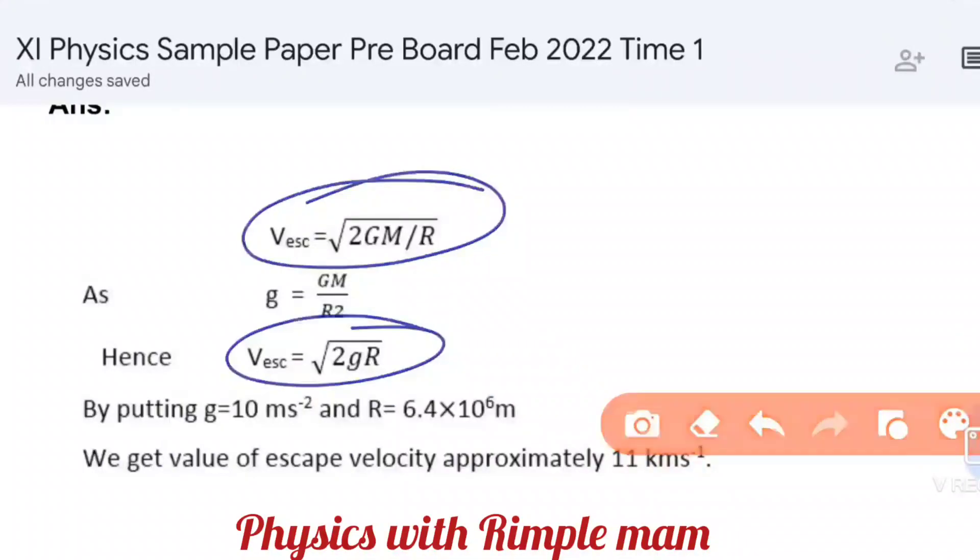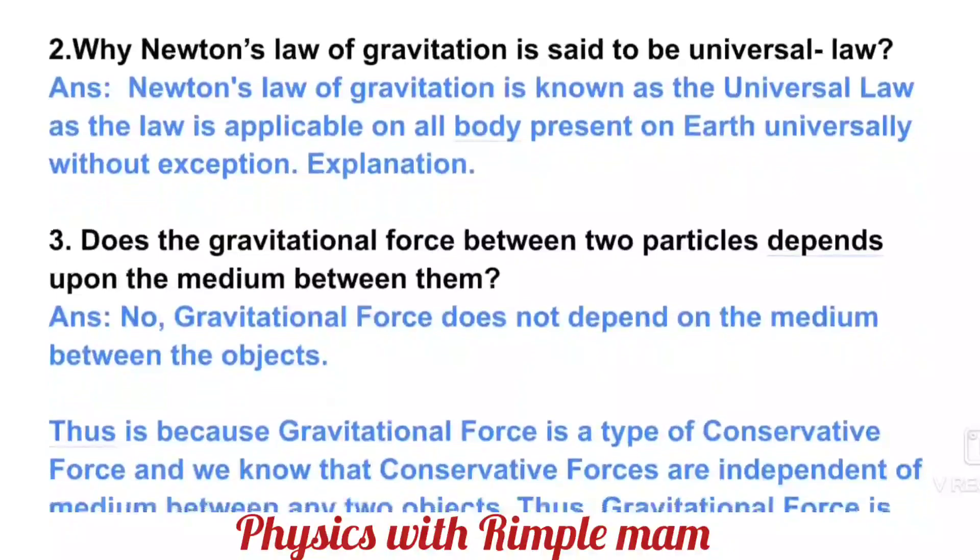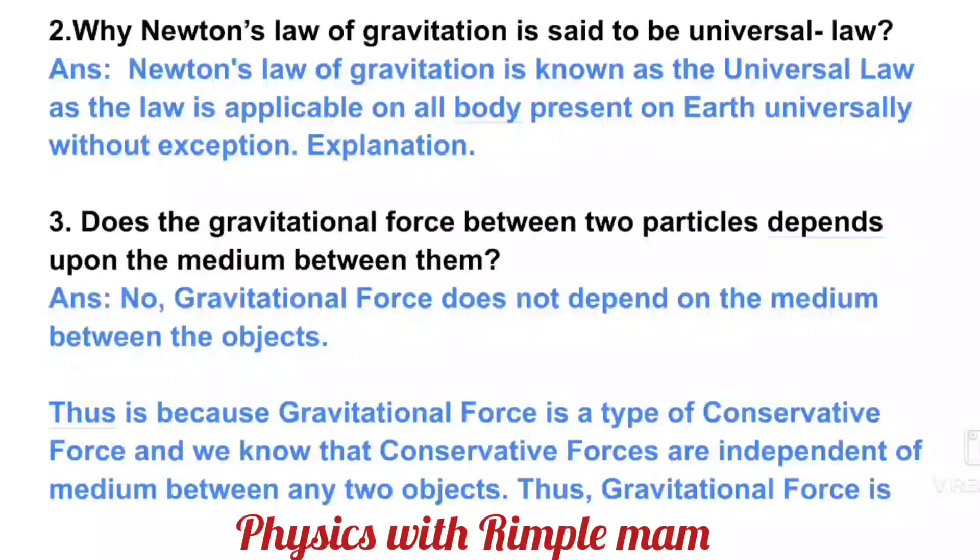Second question: Why is Newton's law of gravitation said to be a universal law? Newton's law of gravitation is known as a universal law because the law is applicable on all bodies present on Earth universally without exception. Any body, even the smallest dust particles, wherever there is mass, in any state, in any country, in any place, this same law will apply. That's why it's called a universal law.